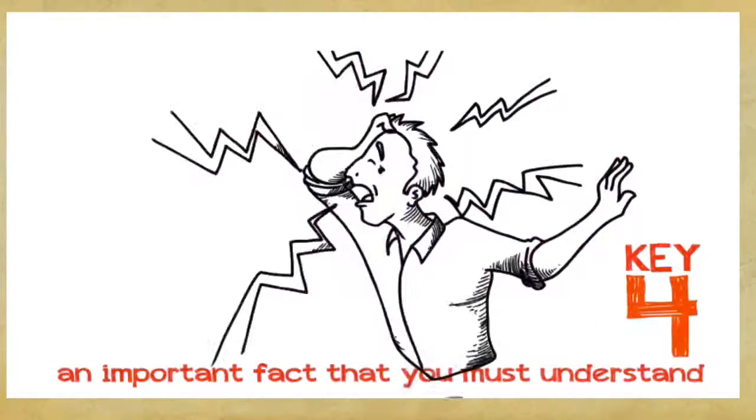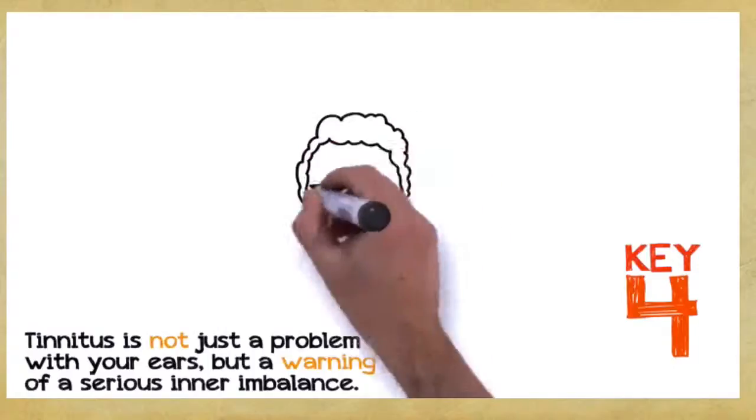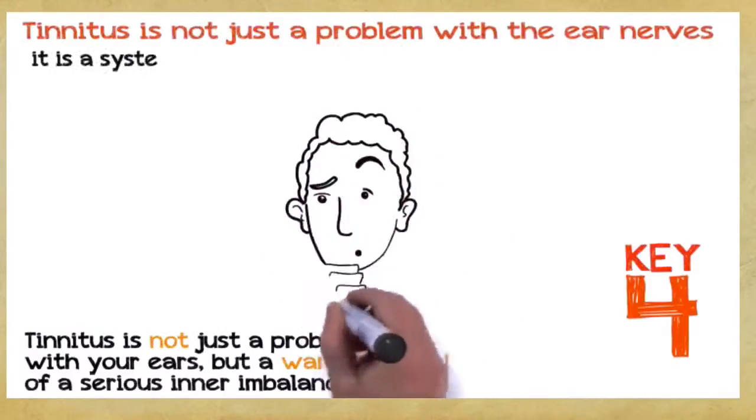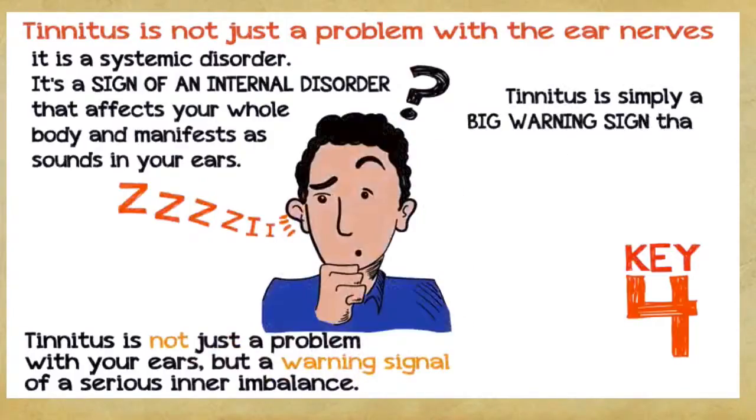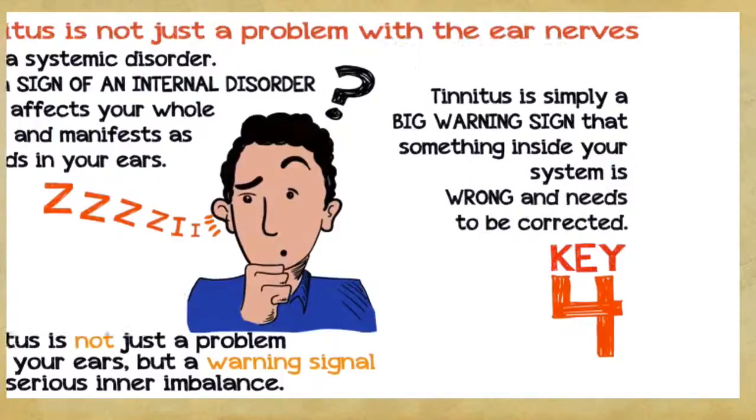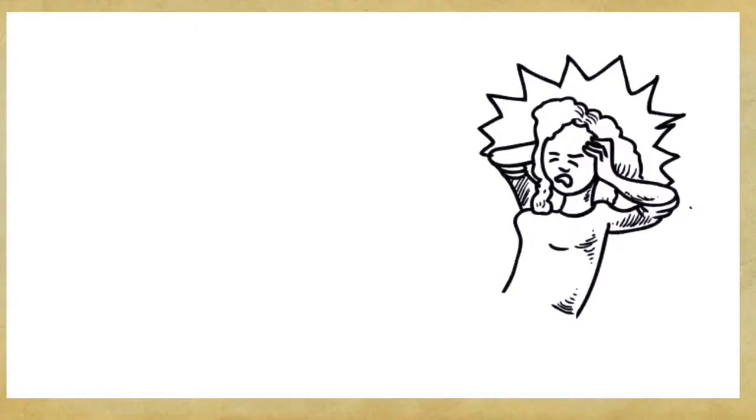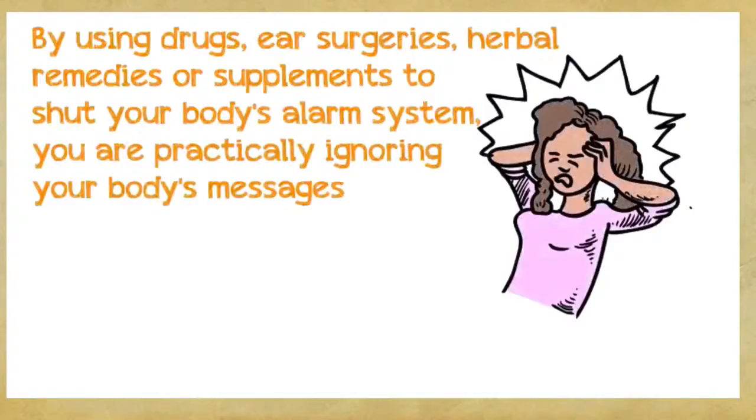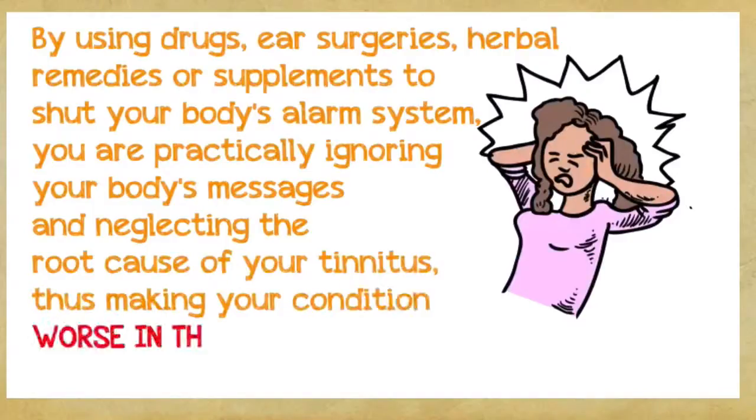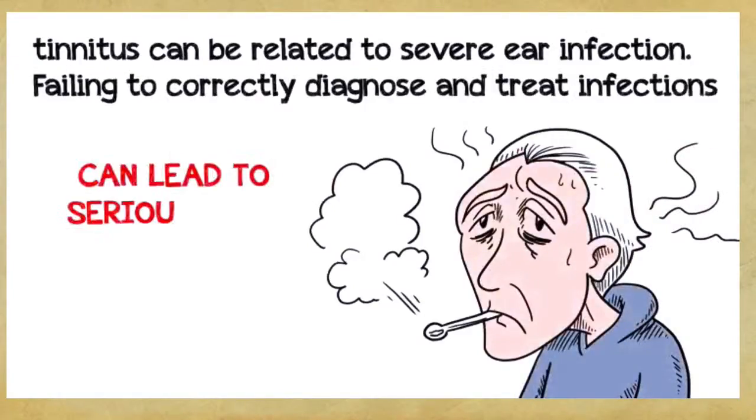Key number four. This is a very important fact that you absolutely must understand if you want to save hundreds or even thousands of dollars. Tinnitus is not just a problem with your ears, but a warning signal of a serious inner imbalance. In the vast majority of cases, tinnitus is not just a problem with the ear nerves, it's a systemic disorder. It's a sign of an internal disorder that affects your whole body and manifests as sounds in your ears. Tinnitus is simply a big warning sign that something inside your system is wrong and needs to be corrected. Failing to diagnose and fix this problem in a timely manner can result in a far more severe and chronic disorder, which can seriously endanger your health. By using drugs, ear surgeries, herbal remedies, or supplements to shut your body's alarm system, you're practically ignoring your body's messages and neglecting the root cause of your tinnitus, thus making your condition worse in the long run. For example, tinnitus can be related to severe ear infection. Failing to correctly diagnose and treat infections can often lead to serious long-term health consequences.